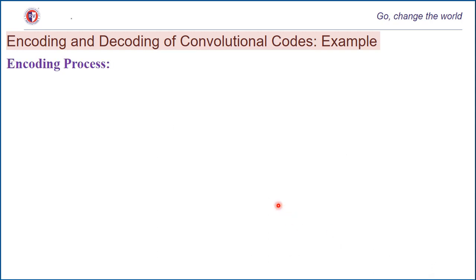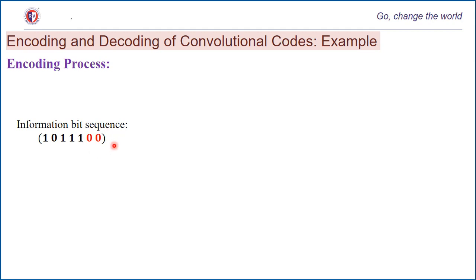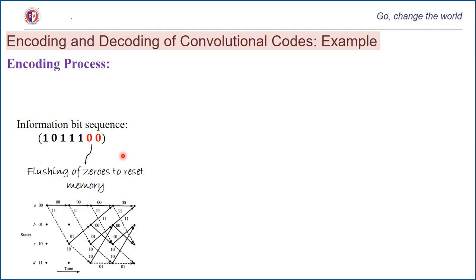For the encoding process, we need the original bit sequence. The information bit sequence given to us is 10111. We will be appending two zeros in order to flush out the memory. We need to reset the memory, as discussed earlier, to bring it back to the zero state. The trellis shown covers only up to 4 time units, but the information bit sequence is 7 bits long, so we need to extend it for 3 more bit durations.